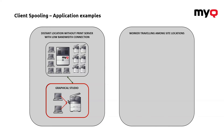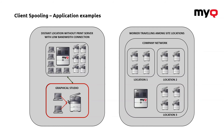Another example is a company with just one print server but multiple locations — say, three different offices on one company network. A supervisor traveling among these sites has the client installed on his computer, so he always communicates with the one central print server. If he's at location one, the client sends the hostname of the computer to the main server, so he can go to any machine at location one and release the print job. The same applies at location three — he communicates with the same print server and can use any local machine because his computer is identified through the hostname.